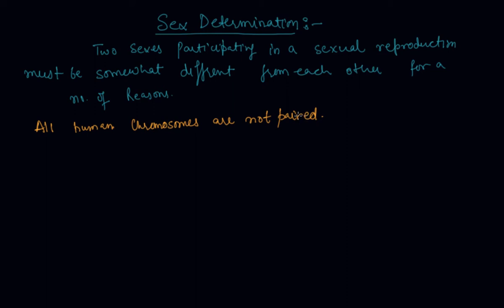Most human chromosomes have a maternal and a parental copy. We have 22 such pairs.